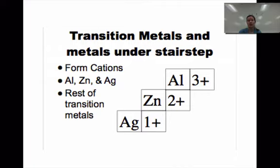Now, before we get to that exception, here's an exception to your exception. Aluminum, zinc, and silver do only make one particular cation, and in that case, they are an exception to our stock naming system that we're going to learn on the next screen.